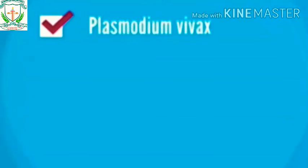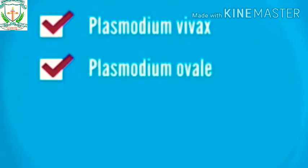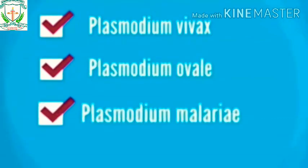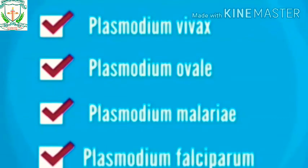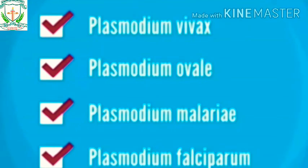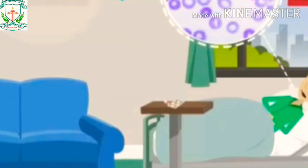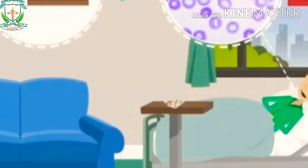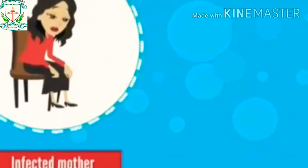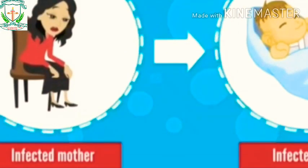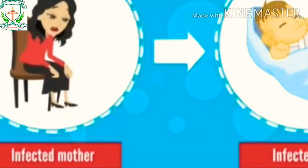There are four kinds of malaria parasites that can infect humans: Plasmodium vivax, Plasmodium ovale, Plasmodium malariae, and Plasmodium falciparum. Plasmodium falciparum causes a more severe form of the disease, and those who contract it have a higher risk of death. An infected mother can also pass the disease to her baby at birth, which is known as congenital malaria.